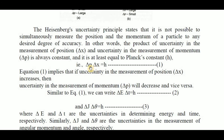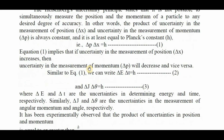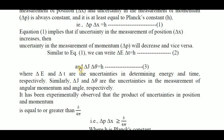If delta x increases, delta p decreases, and vice versa. Similarly, analogous to equation 1, we can write delta E times delta t equals h — that means the product of change in energy and change in time equals Planck's constant h. This is equation number 2.